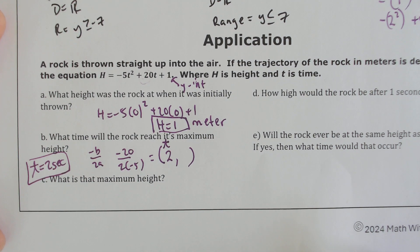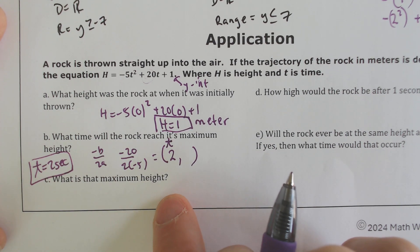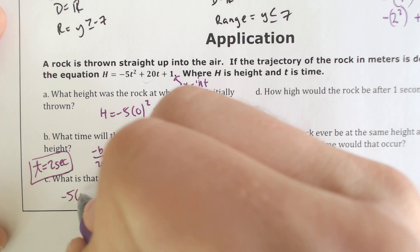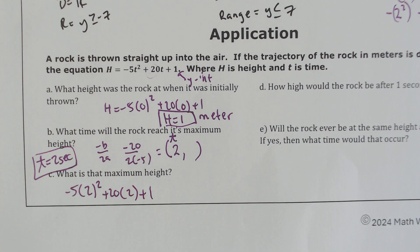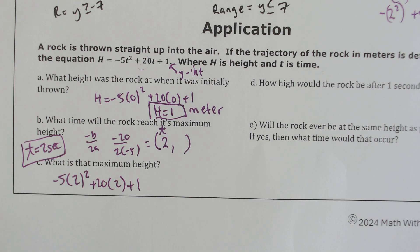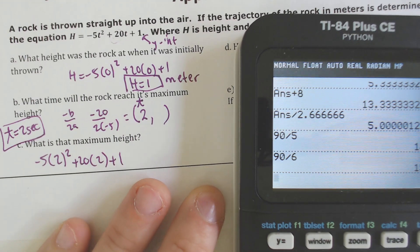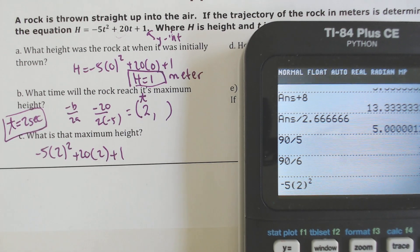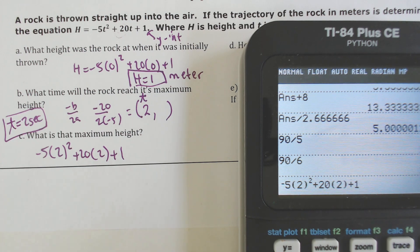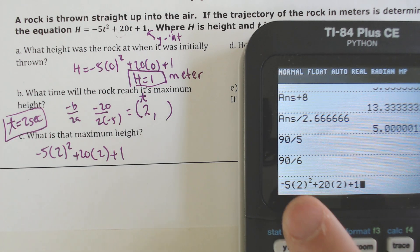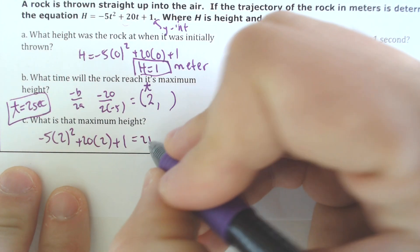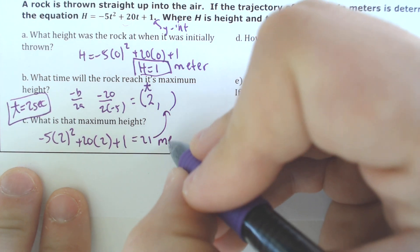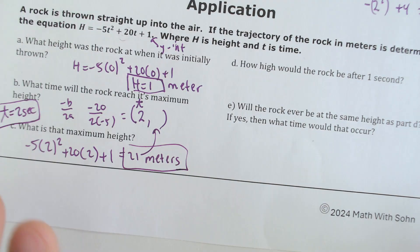What would be the maximum height? The maximum height would be what we get when we plug it in. So that's going to be negative 5 times 2 squared plus 20 times 2 plus 1. Make sure you're using parentheses — if you don't use parentheses, you're going to get it wrong, especially if you're plugging in a negative value for negative b over 2a. If you do all that, you get a height of 21 meters.